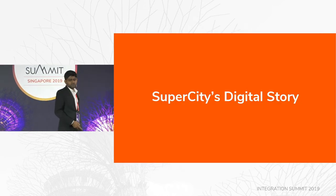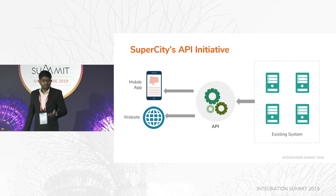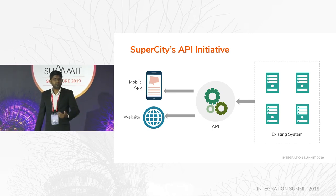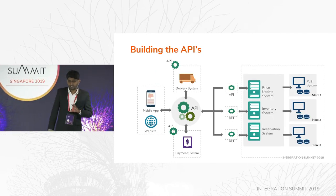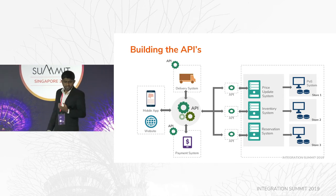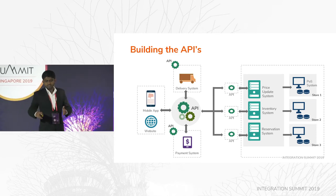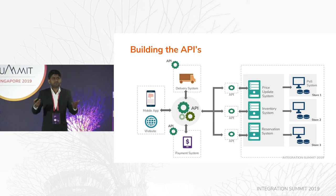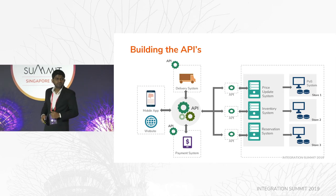Let's get back to the Super City example. We went through the image: they have their existing systems and they want a mobile application, website, and an API. So building the API — going into the details of Super City — for each local store they have a POS system, an isolated system. And they have a centralized price update system, inventory system, and reservation system. I haven't used the HR system here because I've identified these are the systems we need to expose to get the mobile app and website working.